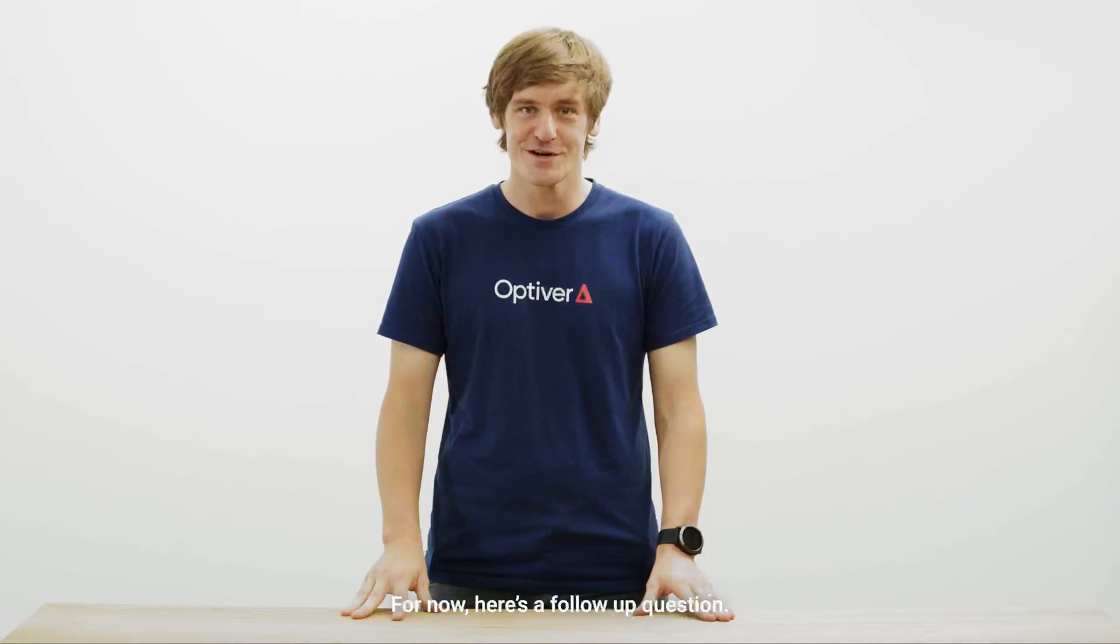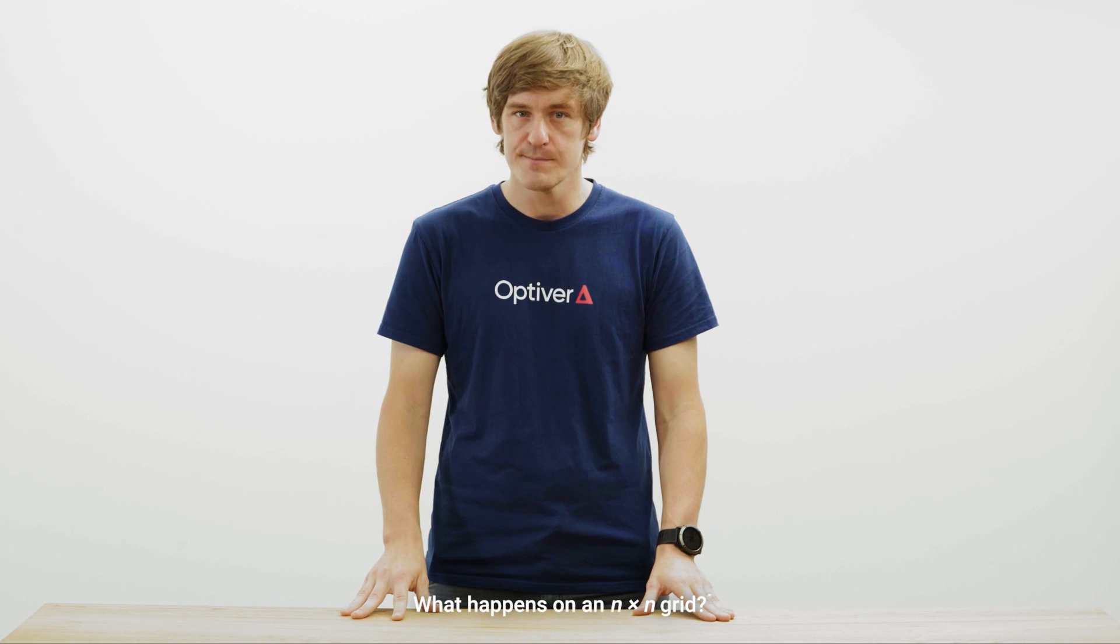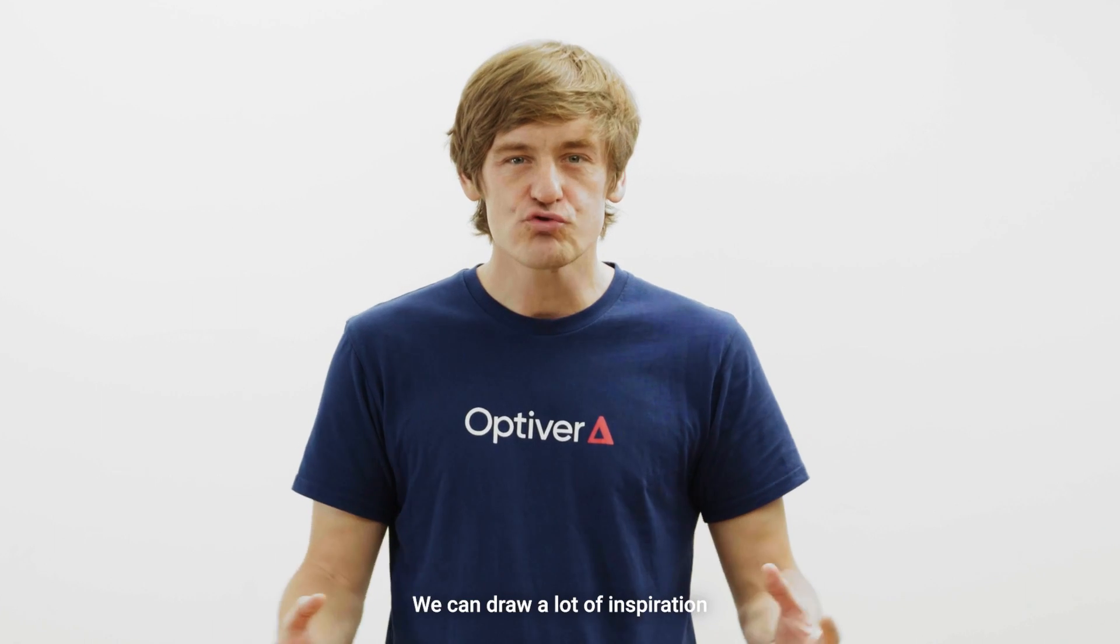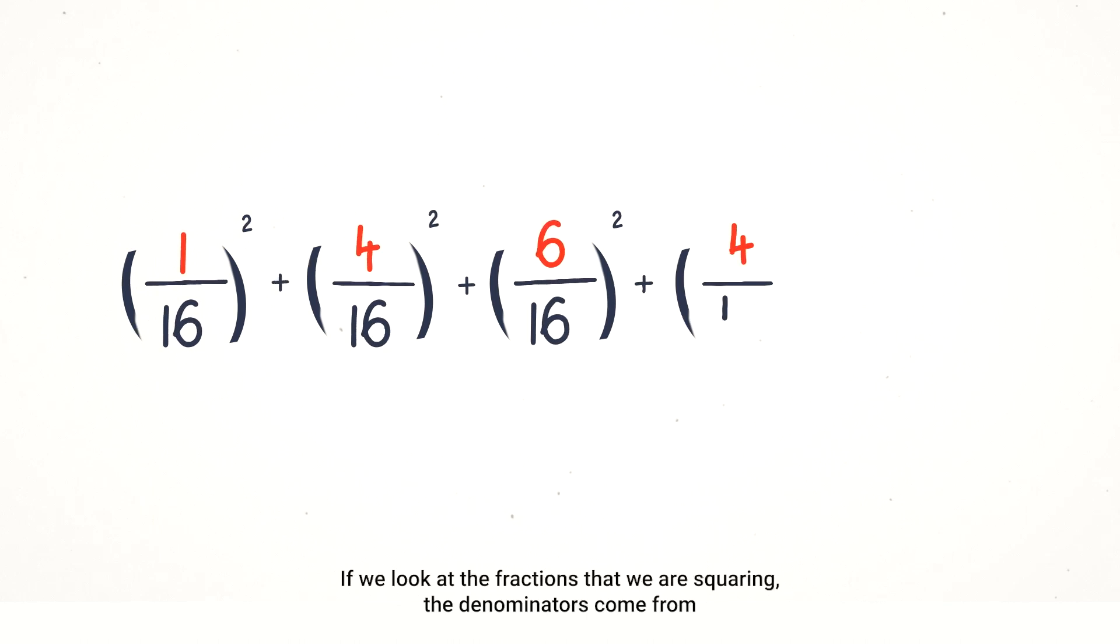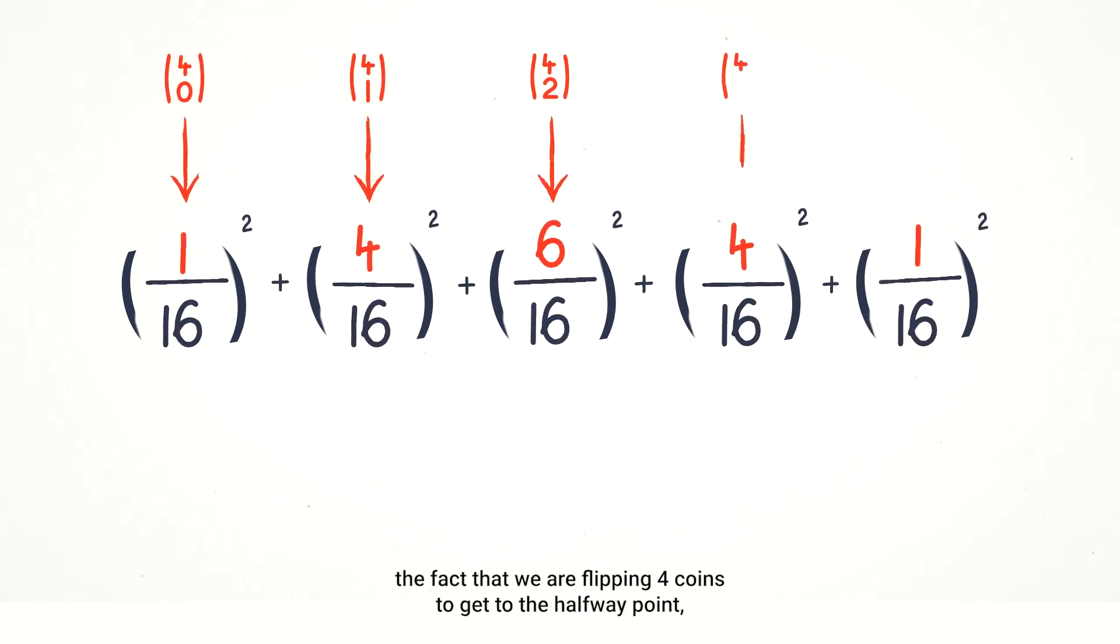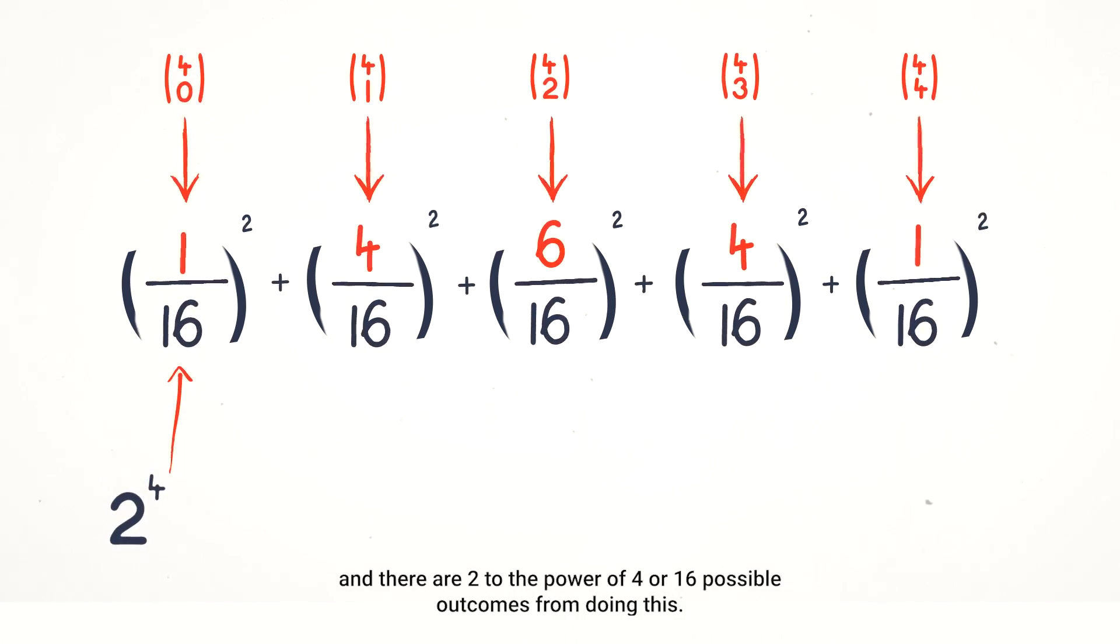For now, here's a follow-up question. What happens on an n-by-n grid? We can draw a lot of inspiration from the structure of the solution for the 4x4 problem. If we look at the fractions that we are squaring, the denominators come from the fact that we are flipping 4 coins to get to the halfway point, and there are 2 to the power of 4 or 16 possible outcomes from doing this.